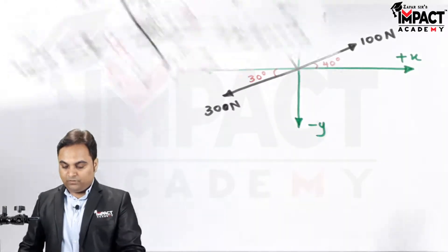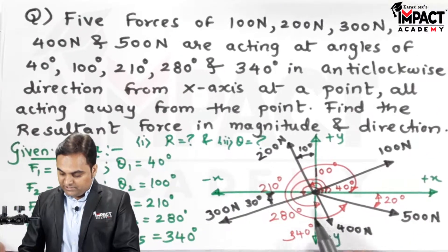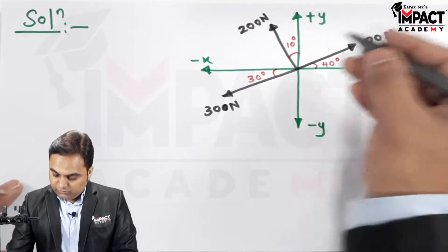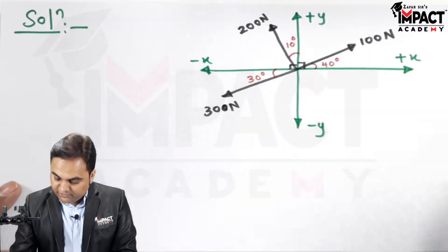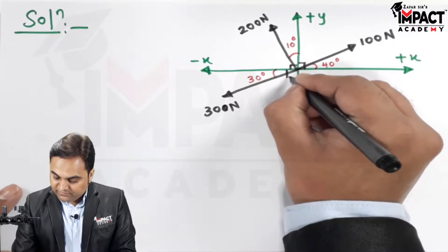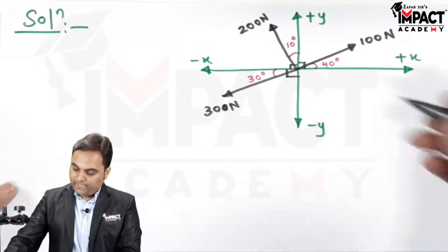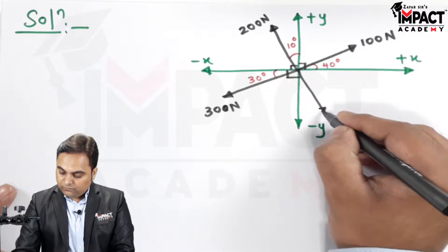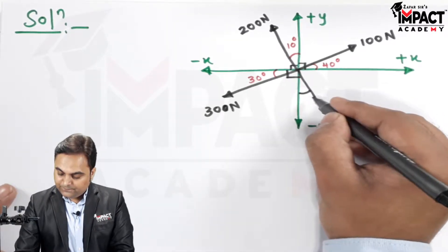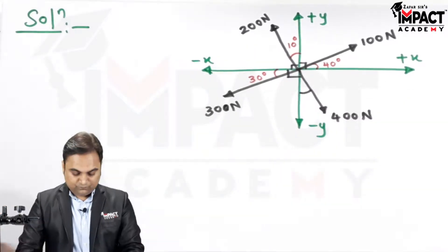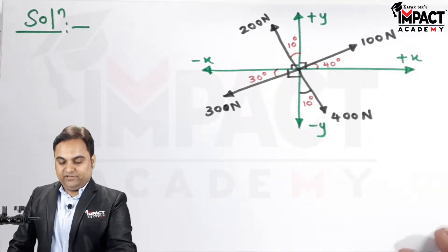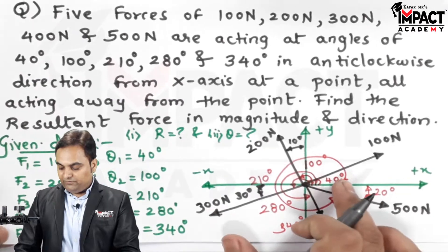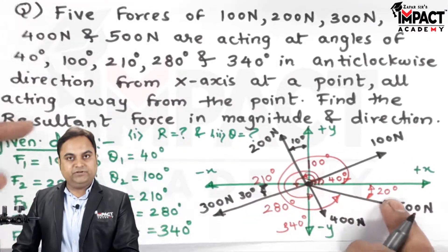The 400 N force is at 280°: the first quadrant is 90°, second is 180°, third is 270°, so 10° further (past the negative y-axis) gives 280°. Finally, the 500 N force is at 340°, which is 20° from the positive x-axis on the other side.